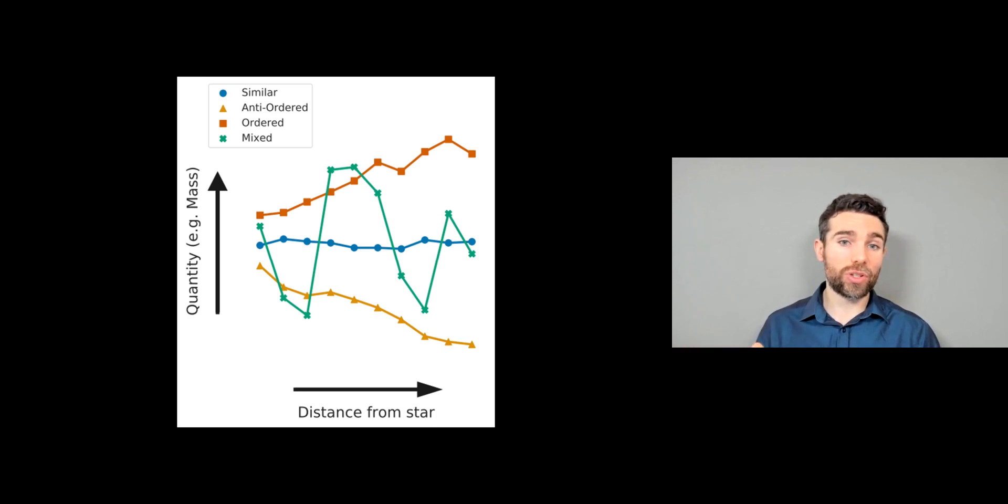Whereas the red one, which is ordered, you can see that's increasing away from the star, and then the anti-ordered is decreasing as it gets from the star, and the similar one you can see going fairly flat. So this just gives you an illustration, as a graph, as to how that mass would change as you got further away from the star.